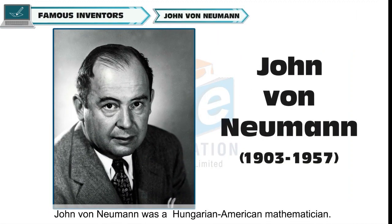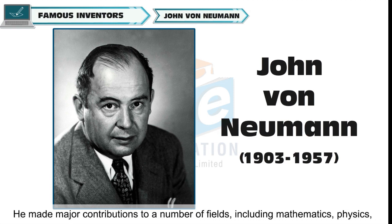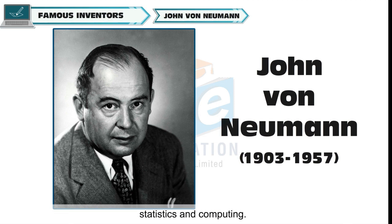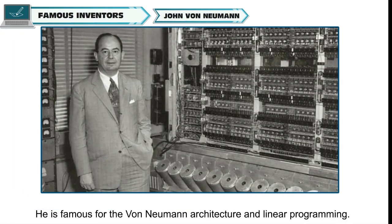John von Neumann was a Hungarian-American mathematician, born on December 28, 1903, in Budapest. He made major contributions to a number of fields including mathematics, physics, statistics, and computing. He is famous for the Von Neumann architecture and linear programming.